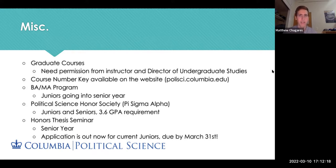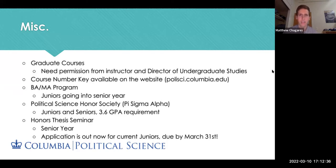There's also a political science honor society called Pi Sigma Alpha, with a chapter here — it's for juniors and seniors with a GPA requirement. Flyers go out every semester and it's a great opportunity to get involved both at Columbia and nationally. One of the best ways to cap your experience is through an honors thesis seminar, which you apply to in your junior year and take as a year-long course in your senior year. The application is due March 31st at 11:59 PM.